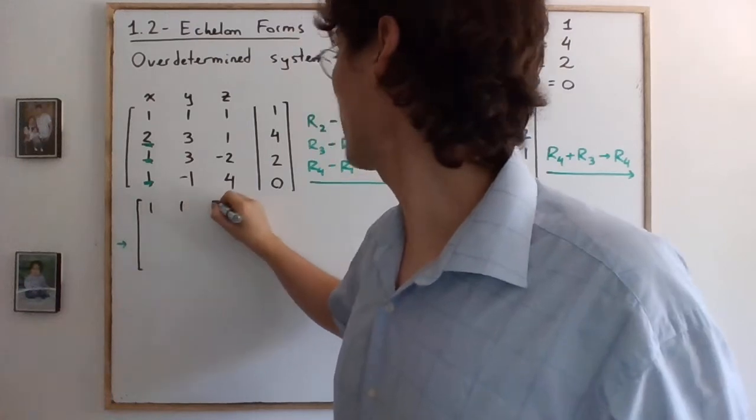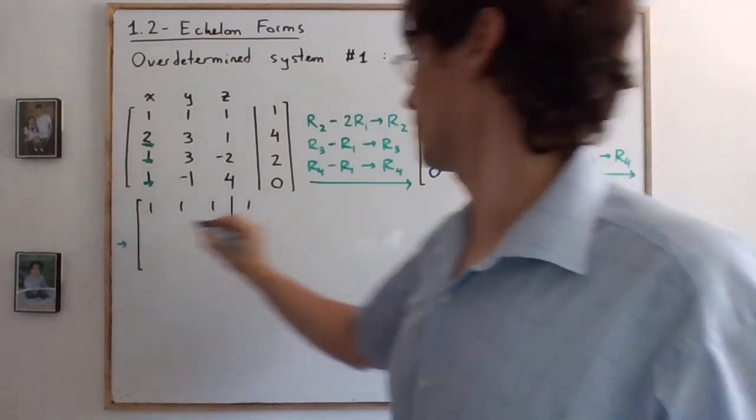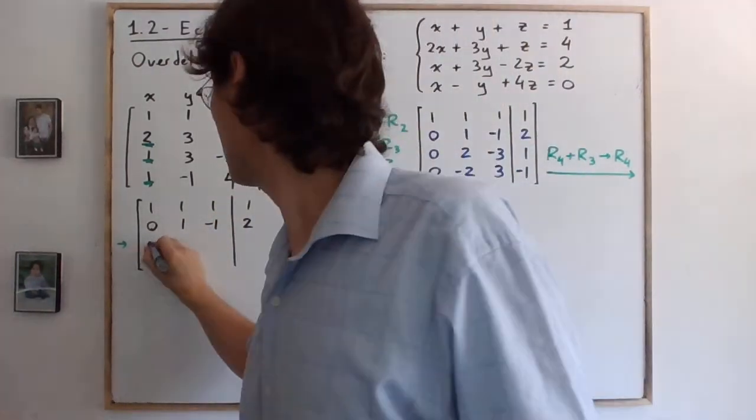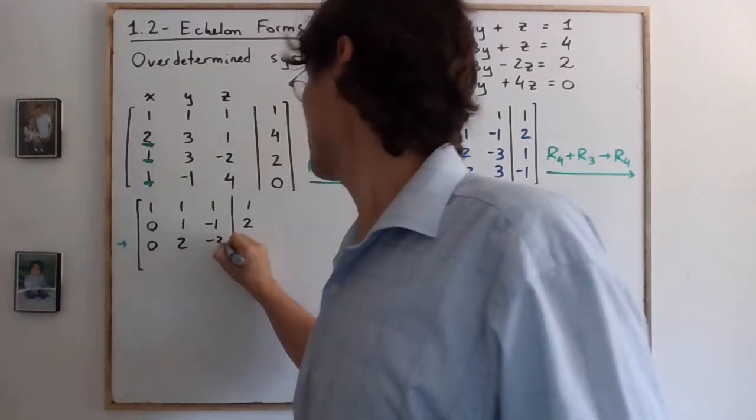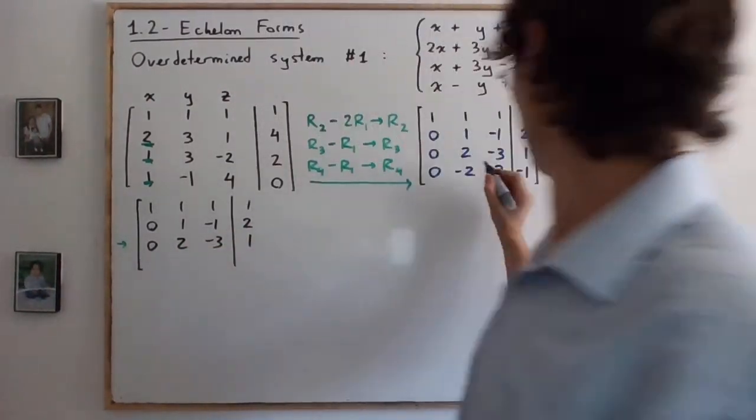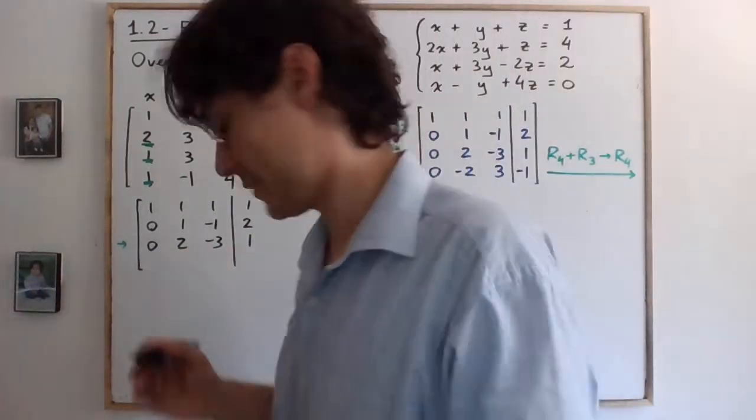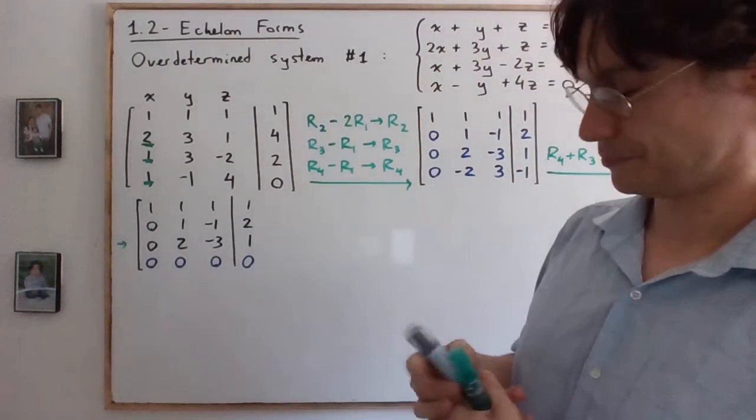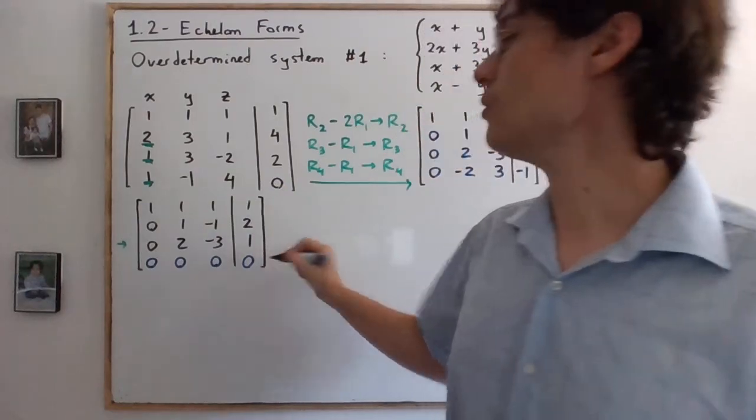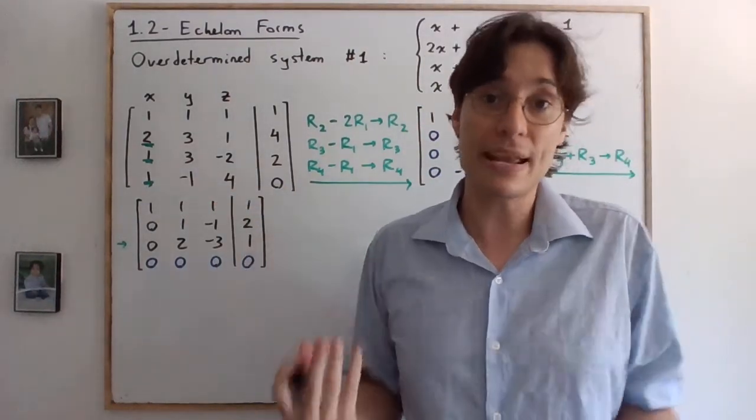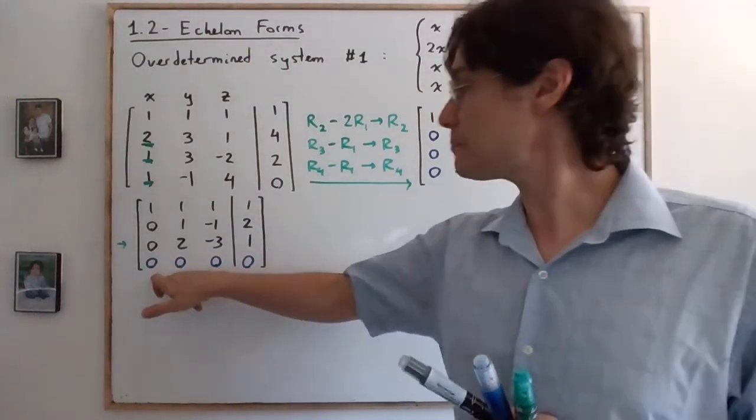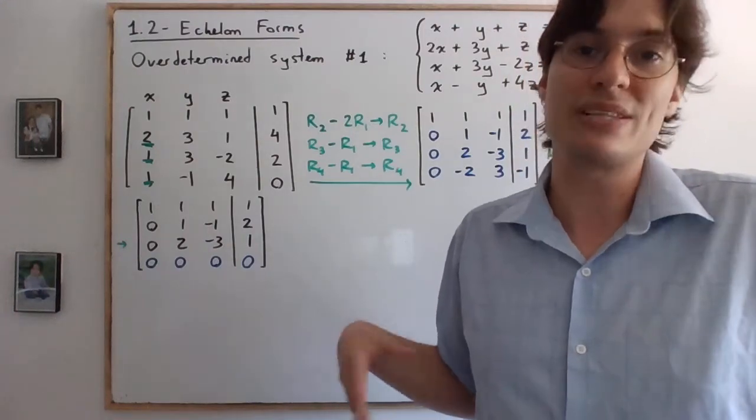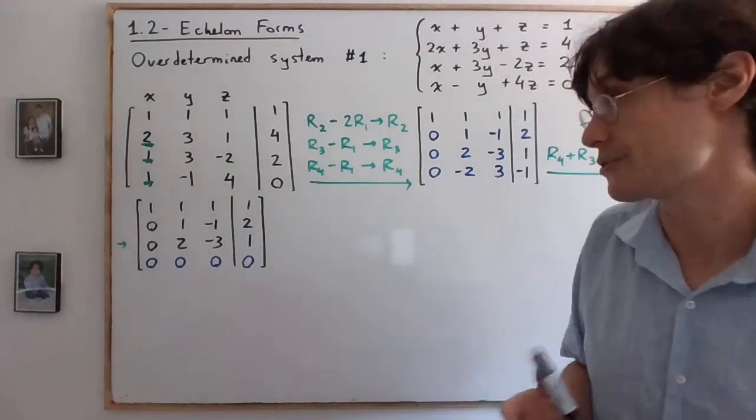So we have one, one, one, one for the first row. Zero, one, negative one, two for the second row. Zero, two, negative three, one for the third row. And finally, we have zero, zero, zero, zero. That's the row that's changing. The reason I'm doing this now, instead of worrying about my pivot, is because now I can completely ignore that row. Because it's a row that's basically saying zero is equal to zero. So it's like an equation that's redundant of the other three.